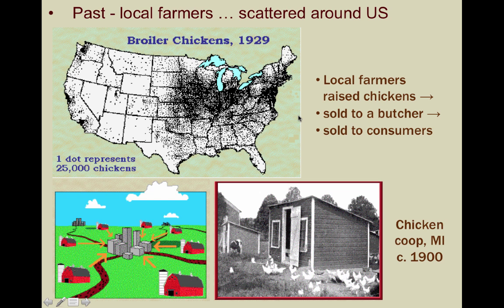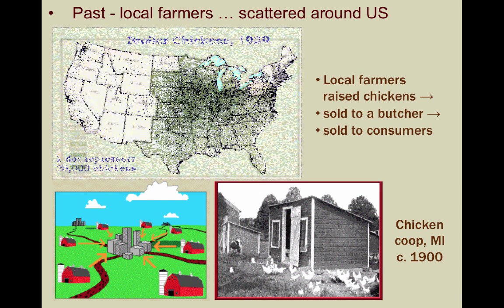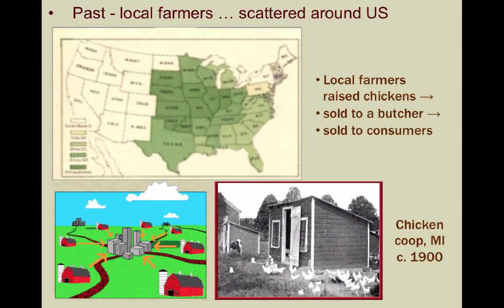Looking at this old and blurry map, you can see where corn was predominantly grown, which is the feed of choice for chickens and many other animals. And look at this photo of a chicken coop circa 1900. This is how many people still think most chickens were raised, but they couldn't be more wrong.